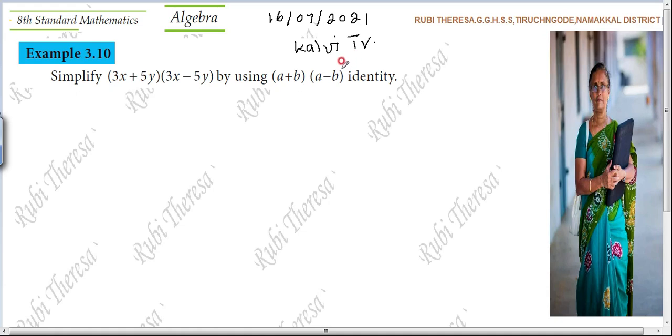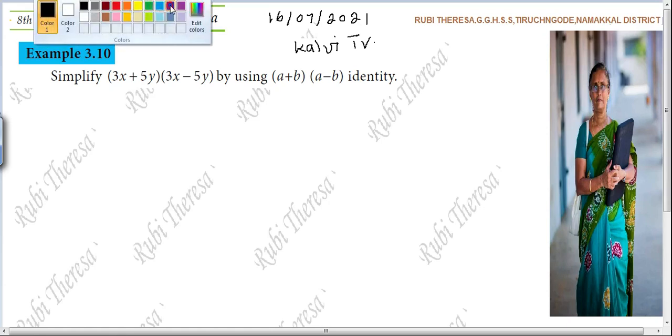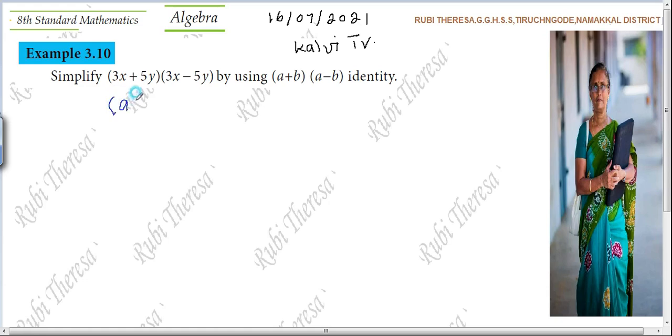So your job is very easy now. What is it they have said? A plus B into A minus B. Identically equal to what? Any one of you? Will you be able to say the answer? Very good. A squared minus B squared. A plus B into A minus B identically equal to A squared minus B squared.